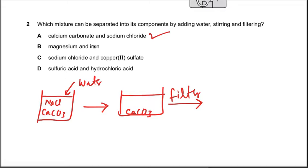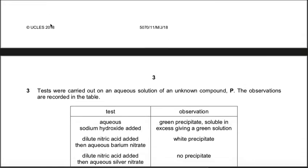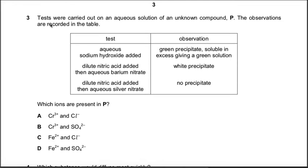So option A is correct. Why are B, C, D wrong? Magnesium and iron, these two metals are reactive, so these two metals will react with water. Both metals will react. Why is option C wrong? Sodium chloride and copper 2 sulfate, both salts are soluble in water, so you are unable to do filtration. Sulfuric acid and hydrochloric acid, these two acids are also soluble in water, so when you add water in these acids both acids will dissolve and you are unable to get the filtration.